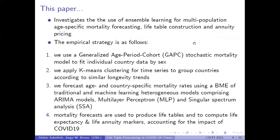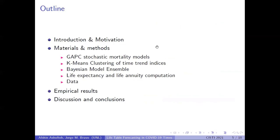The empirical strategy is as follows. We first use one member of the generalized age-period-cohort stochastic mortality model to fit individual country data by sex. We then apply a clustering method to group countries according to similar longevity trends. Afterwards, we forecast age-specific and country-specific mortality rates using Bayesian model combination with three different methods: traditional ARIMA, a neural network approach using a multi-layer perceptron structure, and a singular spectrum analysis model as the learning algorithms. Finally, we use the combination to forecast mortality rates to compute life expectancy and life annuity prices.